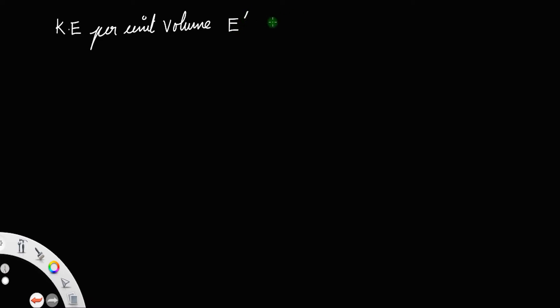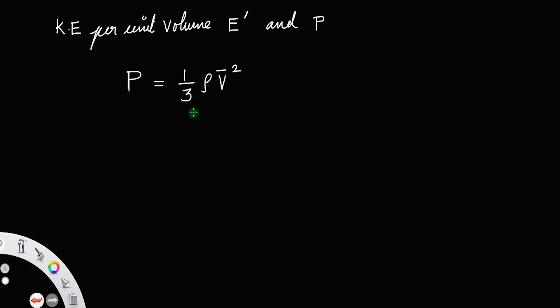Now, let us find out the relationship between kinetic energy per unit volume — let us represent that as E' — and pressure p. We already have derived the relationship connecting the pressure and root mean square velocity: pressure exerted by a gas equals 1/3 ρv̄². If you have any doubt regarding the derivation, you can always go back and check the video; I will put the link in the description below. Let us call that equation number 1.